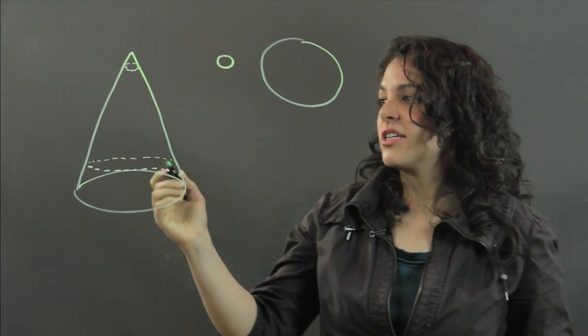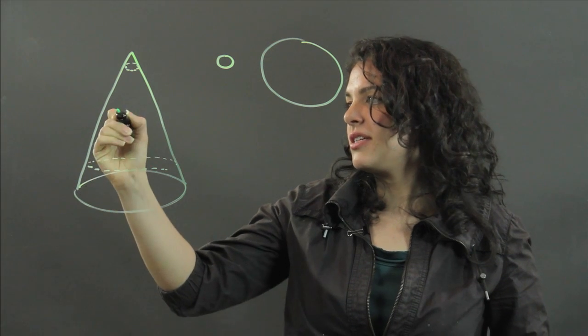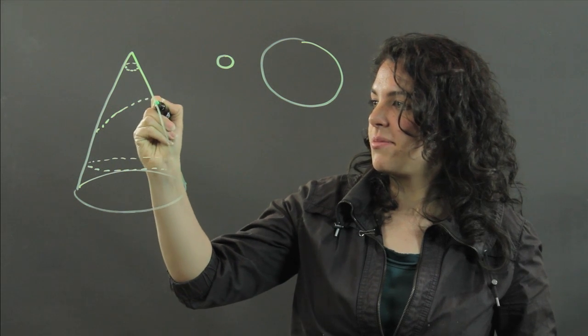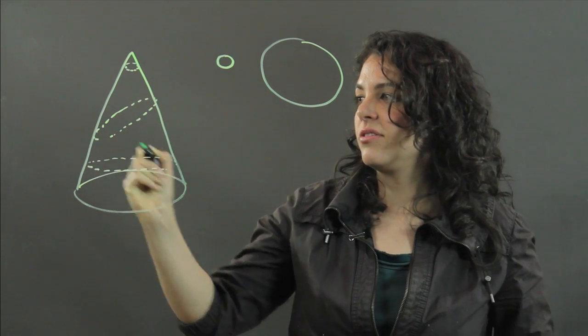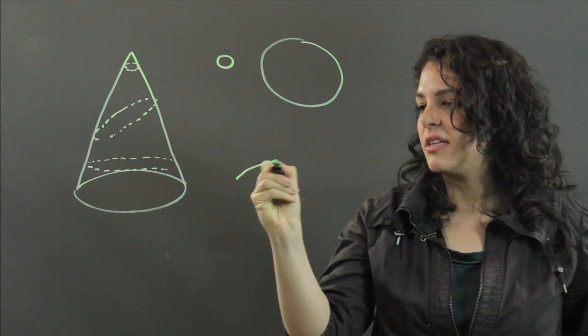Now the cross-section could also, I made these parallel to the base, the cross-section doesn't have to be parallel to the base. The cross-section could be something coming in here at a diagonal. And in this case, we would have a cross-section that is an ellipse.